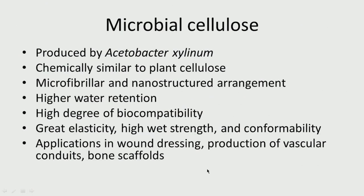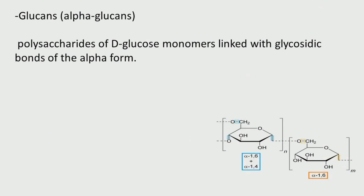Microbial cellulose — microbes such as Acetobacter xylinum also produce cellulose that is chemically similar to plant cellulose. It has a microfibril and nanostructured arrangement, can retain water, has very good biocompatibility, great elasticity, and high wet strength. It can be used in wound dressing, production of vascular conduits, and bone scaffolds — combined with hydroxyapatite for bone filling and so on.